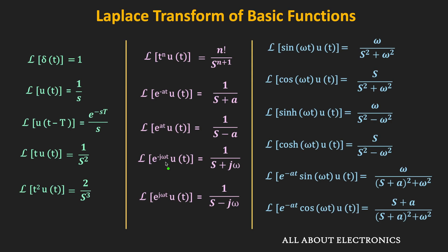In the earlier videos we have seen how to find the Laplace transform of the basic functions. For example, if we have a ramp function, from the table we know that its Laplace transform is equal to 1 divided by s². Now in the S domain if we have a function 1/s², we can say that its inverse Laplace transform is t·u(t). Using this Laplace transform table we can use the one-to-one correspondence between X(s) and x(t) to easily find the inverse Laplace transform.